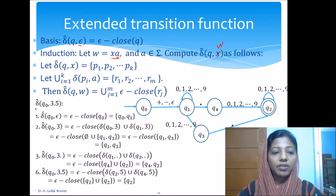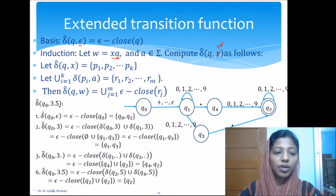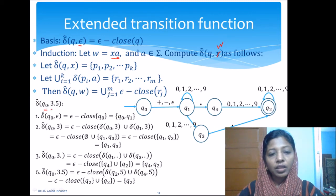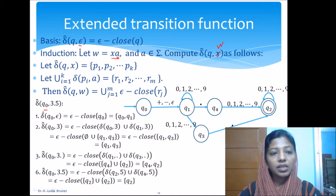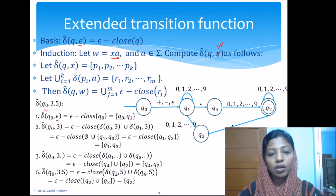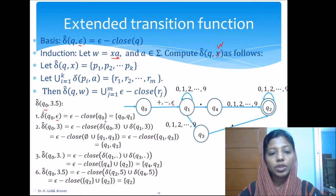Now let us find delta-cap of q₀ on the string '3.5', starting from the starting state q₀. From q₀, using the basis upon the null string, we can either be at q₀ or, using the epsilon transition, we can be at q₁. So the epsilon closure of q₀ includes {q₀, q₁}.